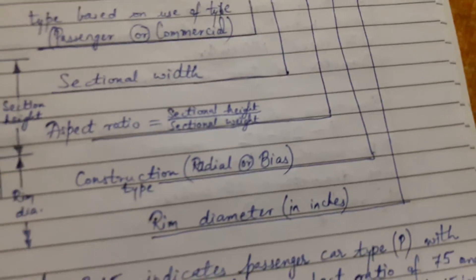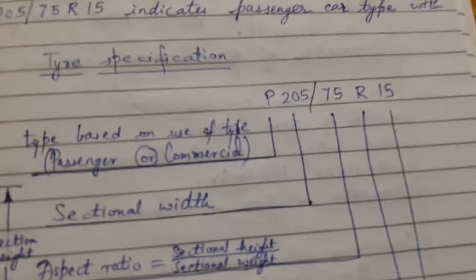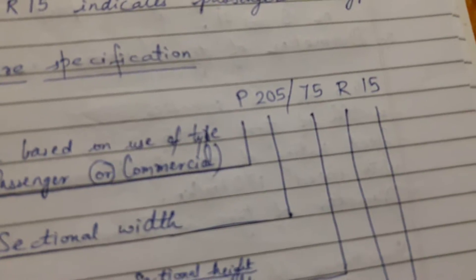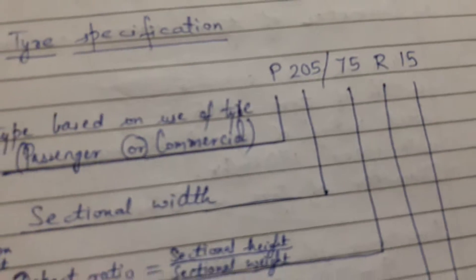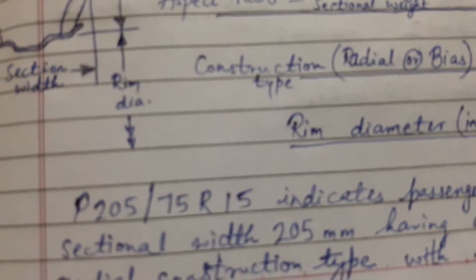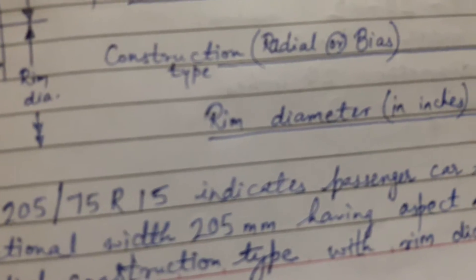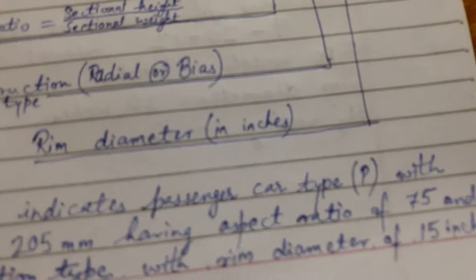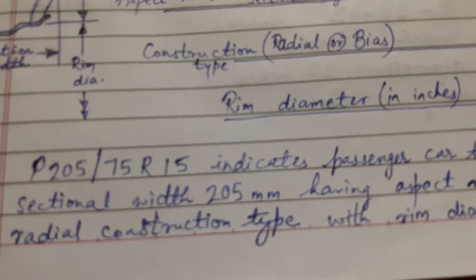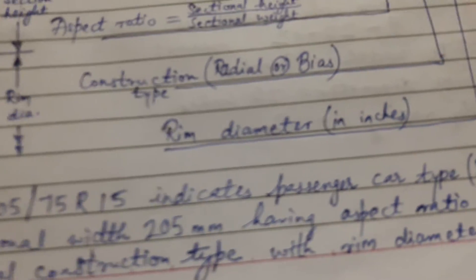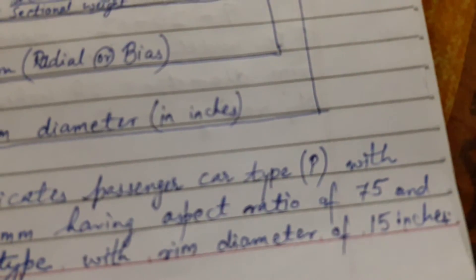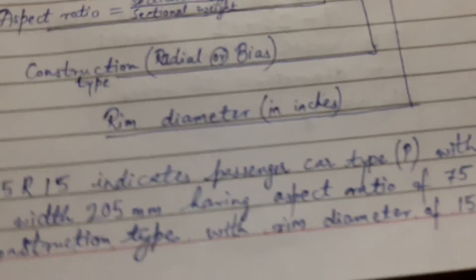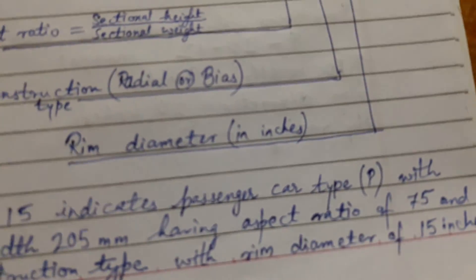So as such, the tire can be specified with an example P205 slash 75 R15. P205 slash 75 R15 indicates passenger car type, that is P, with sectional width 205 mm, having aspect ratio of 75, and radial construction type with rim diameter of 15 inches.